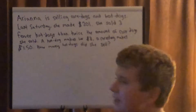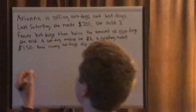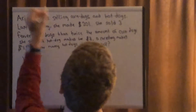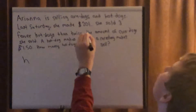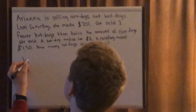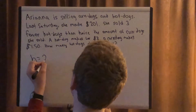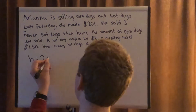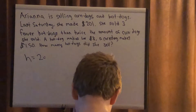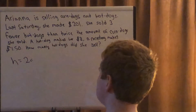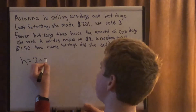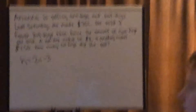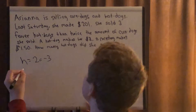Let's think about what's going on. We have hot dogs equal to three fewer than twice the amount of corn dogs, so h equals twice the amount of corn dogs — that's 2c — and then minus three. So our first equation is h equals 2c minus three.